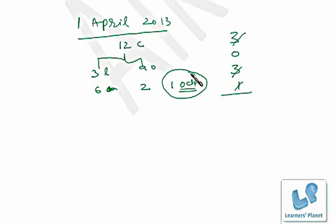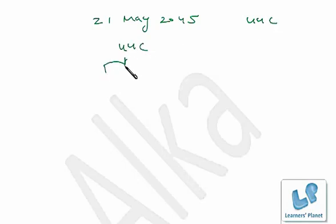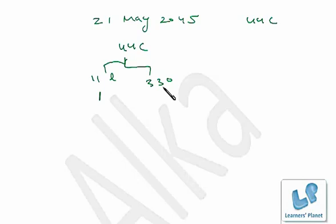Now here is a practice question: find the day for 21st May 2045. Try it on your own, then match with my solution. After 2000, 0 odd days. 44 completed years: 11 leap years and 33 ordinary years. Per leap year 2 odd days, so 11 × 2 = 22, which gives 1 odd day (22 mod 7 = 1).